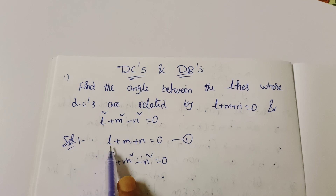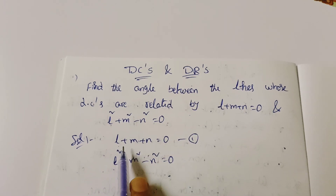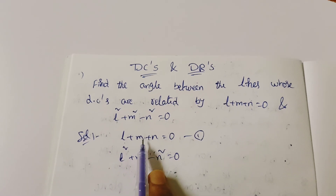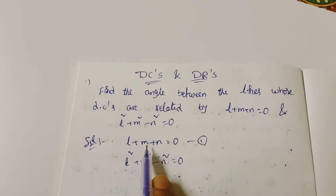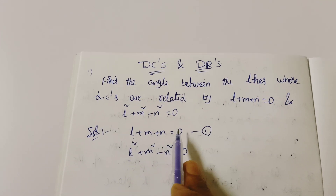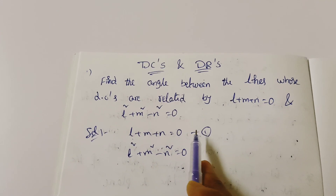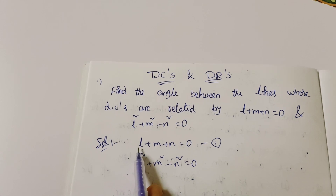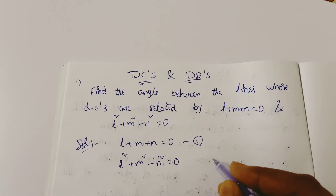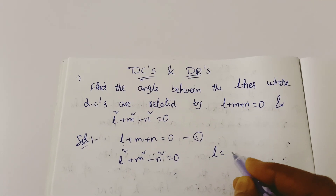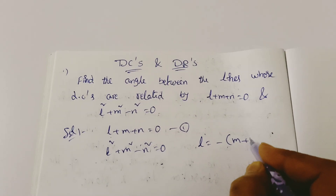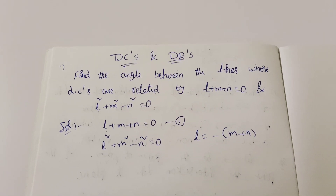From the first equation, L plus M plus N equal to 0, we get L equal to minus M plus N. So L equals minus of (M plus N).